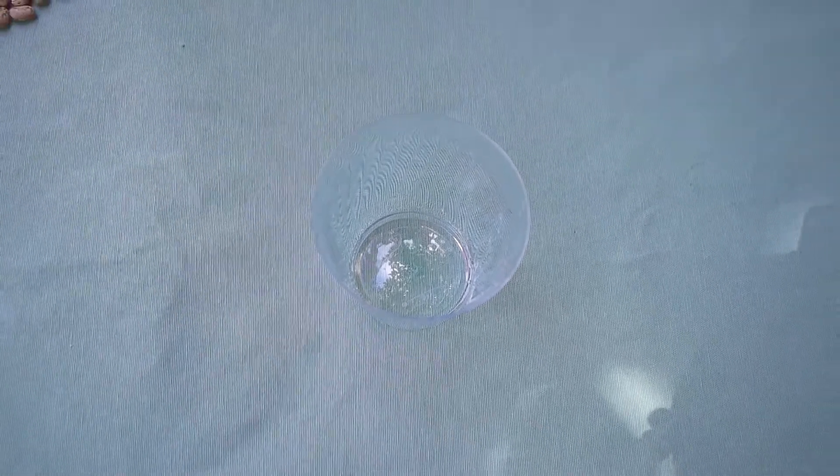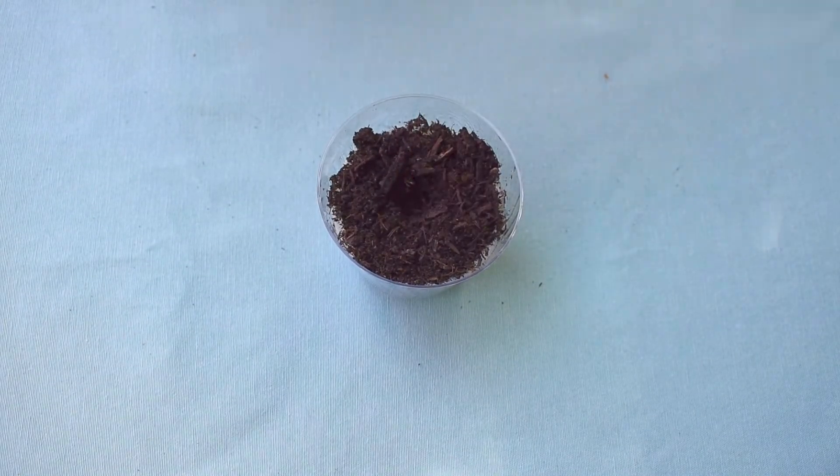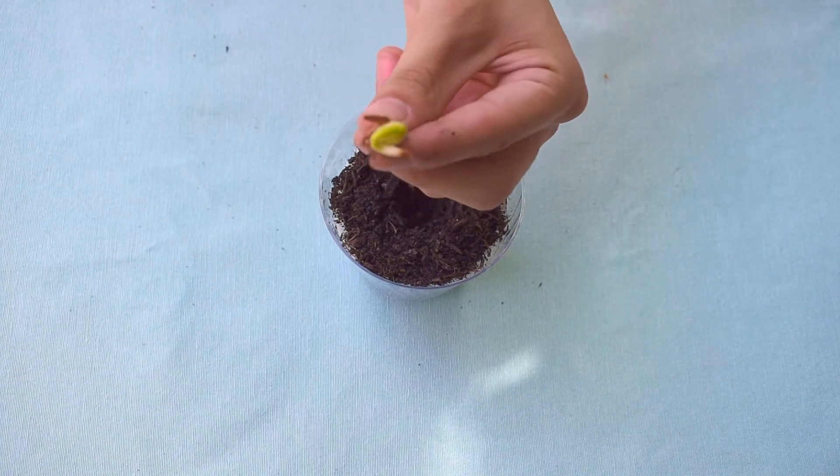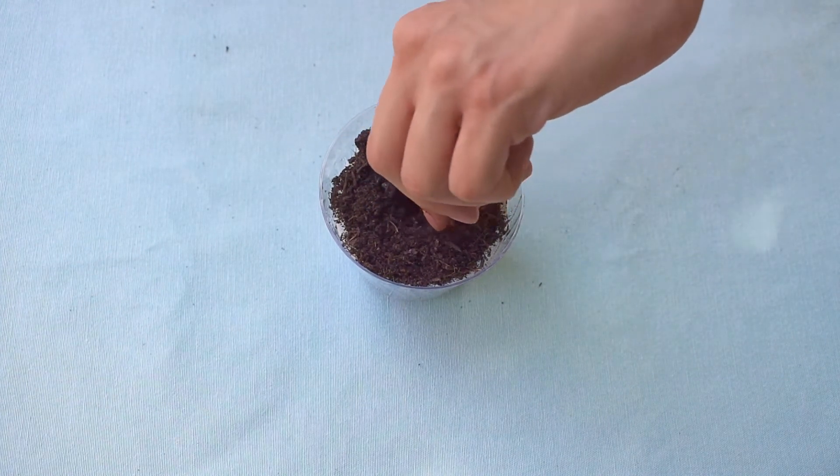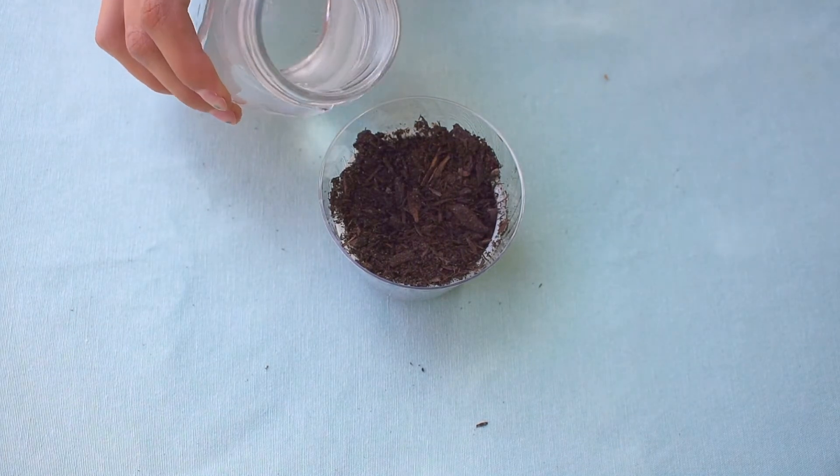And to plant your beans, you're going to need a cup and soil. Once you have all that ready, just go ahead and poke your hole in your soil to fit your bean. Place your bean inside and cover up the bean. Lastly, just add your water and wait for your plant to grow.